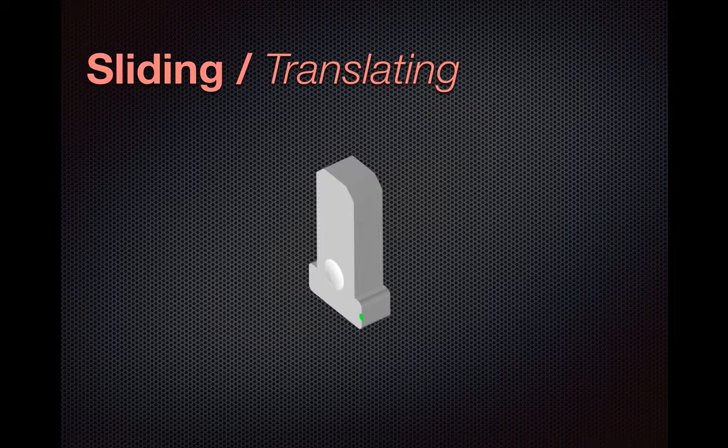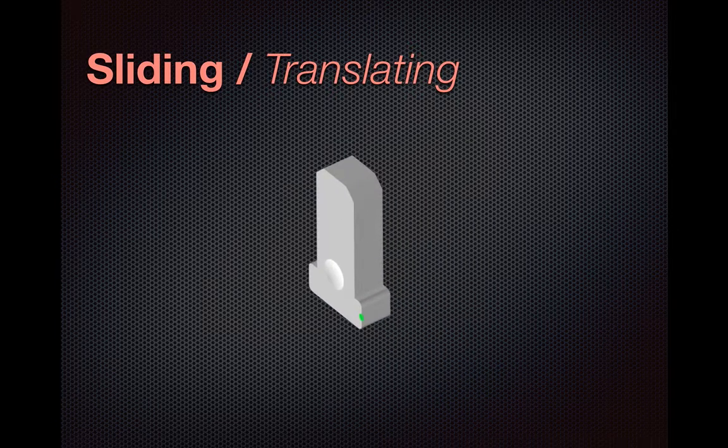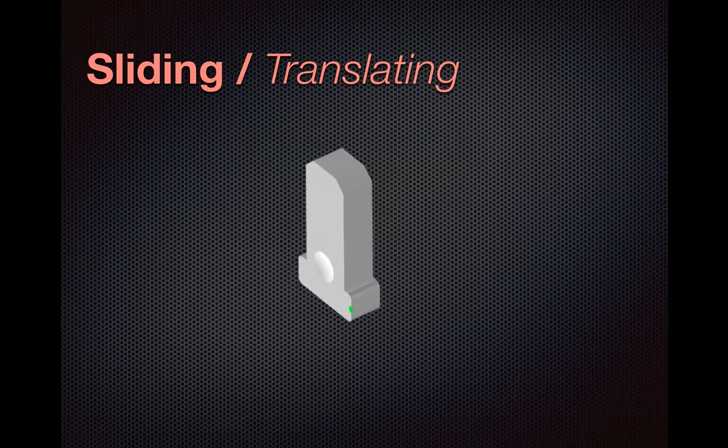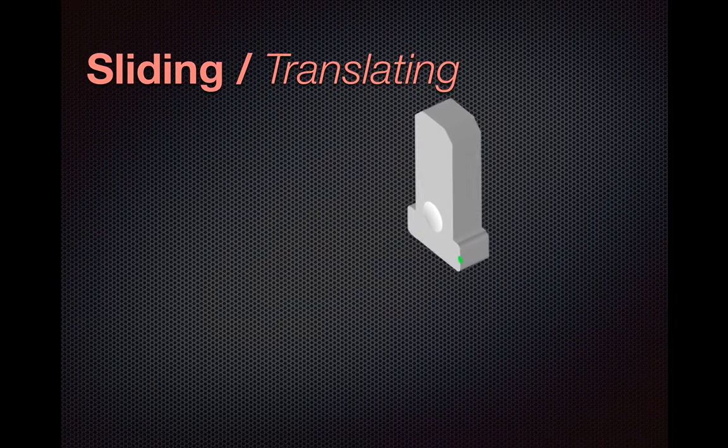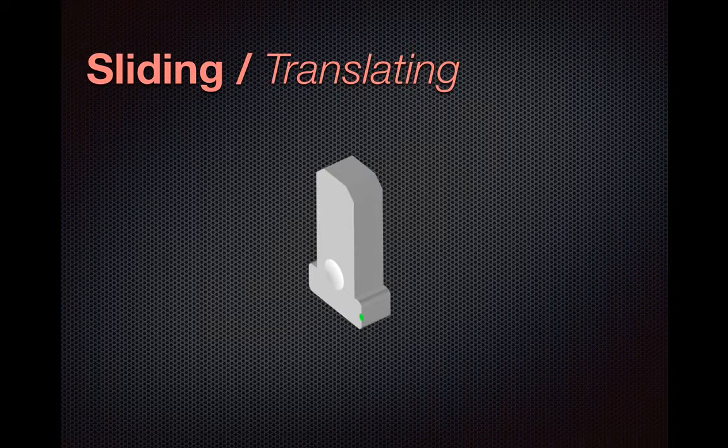Sliding, or the less commonly used term translating, refers to the type of movement where the whole transducer is moving along the plane which can either be along its own long axis like so or along its short axis like so. Having said that, most commonly we'll be referring to the direction in relation to the patient such as sliding the transducer more medially or sliding the transducer to the patient's left.